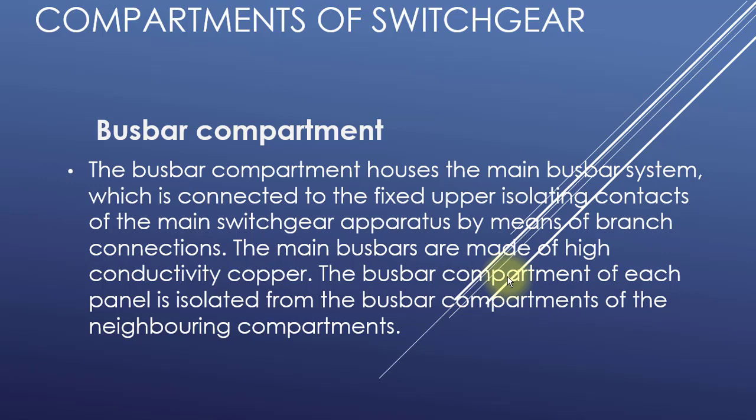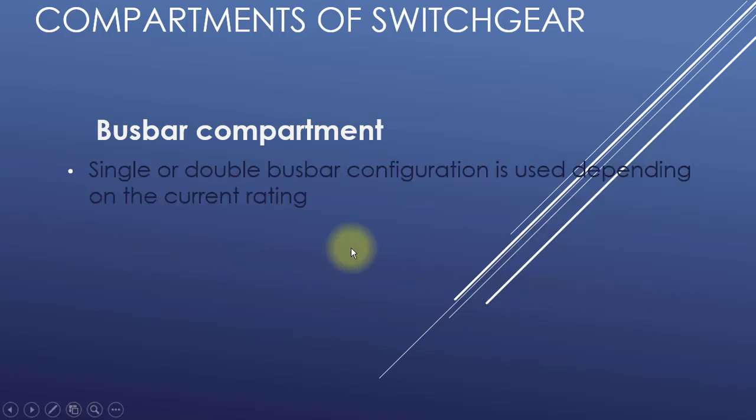The main bus bars are made of high conductivity copper. The bus bar compartment of each panel is isolated from the bus bar compartment of the neighboring compartments. Single or double bus bar configuration is used depending on the current rating.